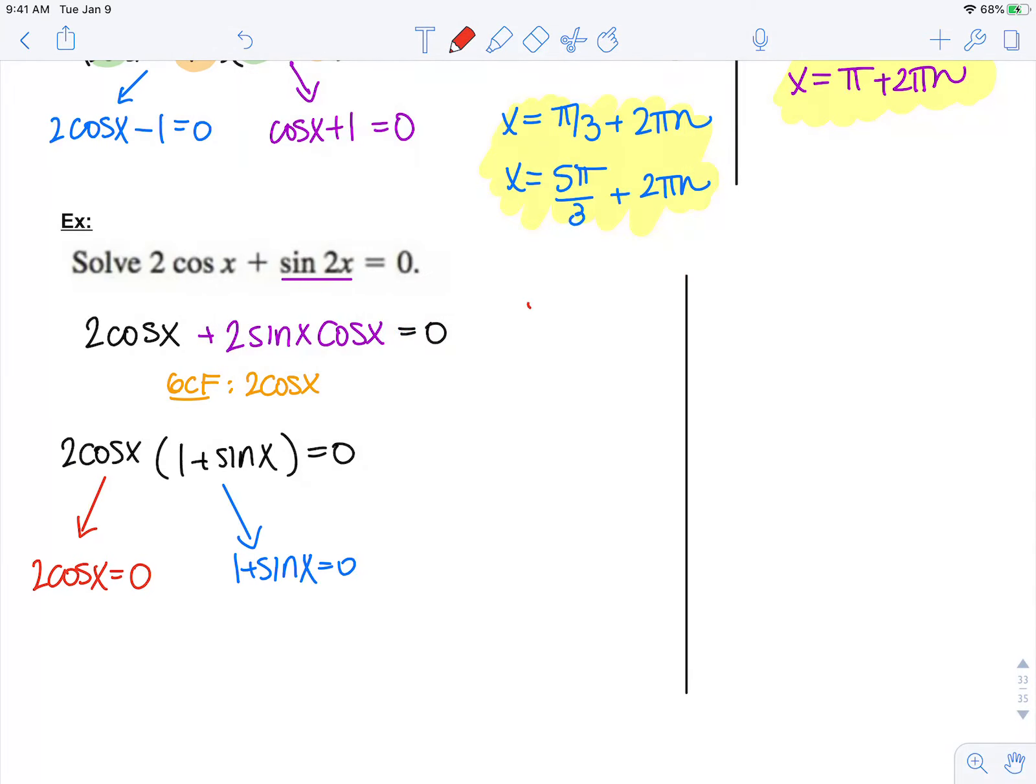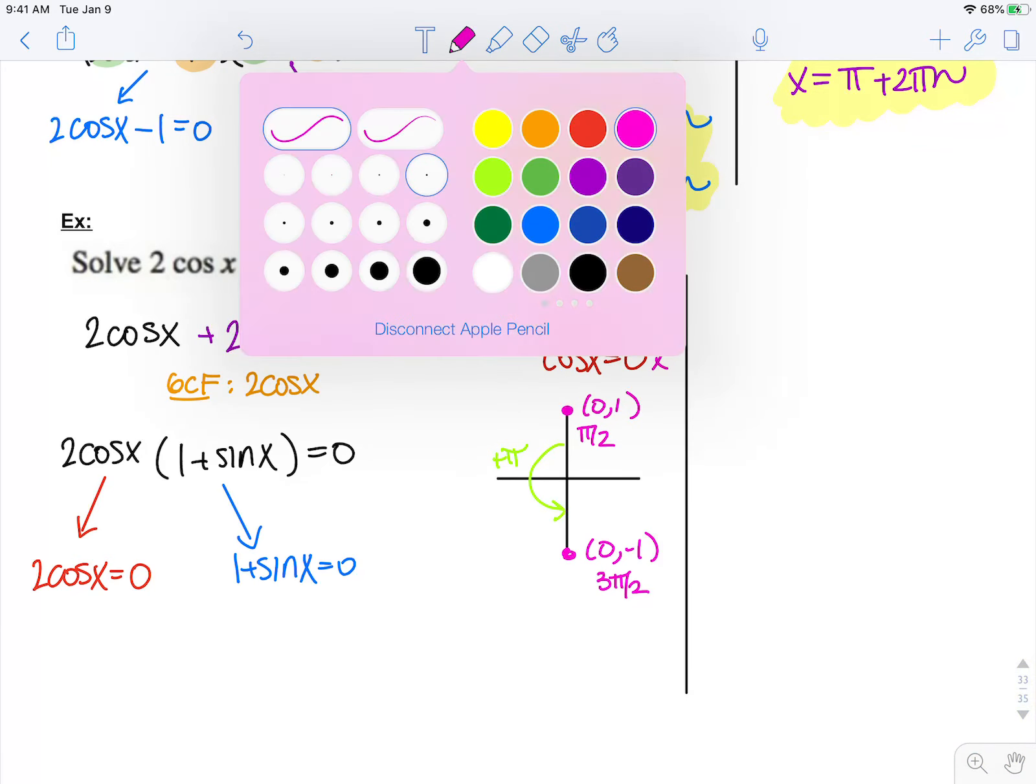2 cosine x equals 0, that means cosine x equals 0. Remember that cosine in my unit circle is x, so I have to think about where in my unit circle is x equal to 0. That happens up here at (0, 1) which is pi over 2, and down here at (0, negative 1) which is 3 pi over 2. But when I look at these two angles, they are pi away from each other, so my general solution here is x equals pi over 2 plus pi n.